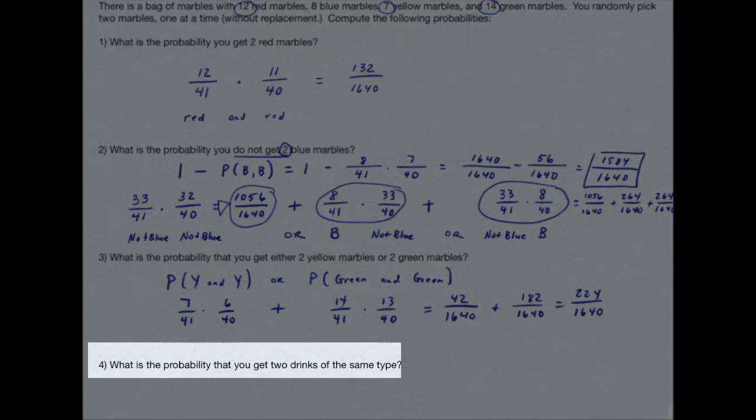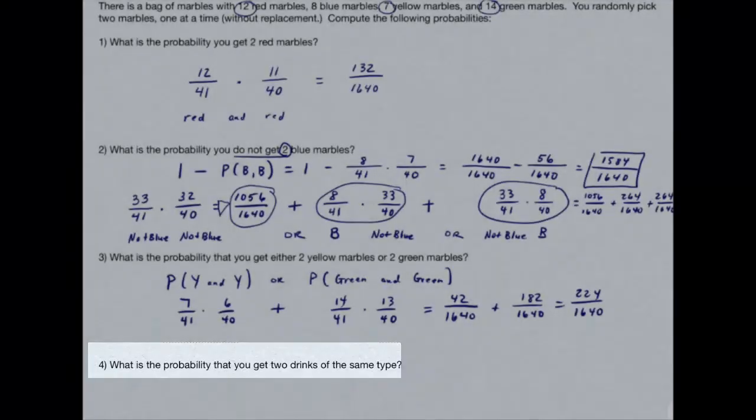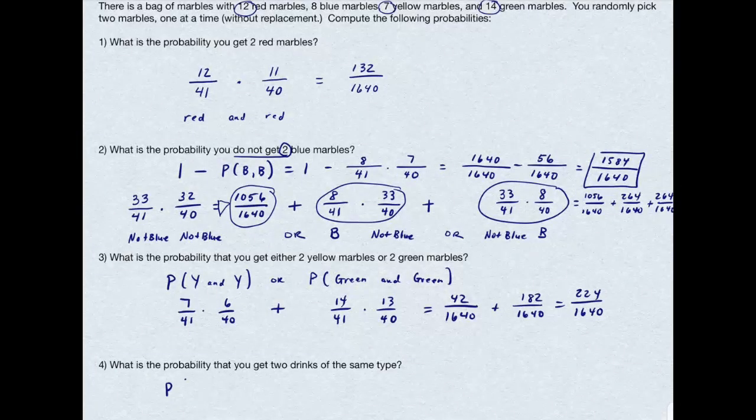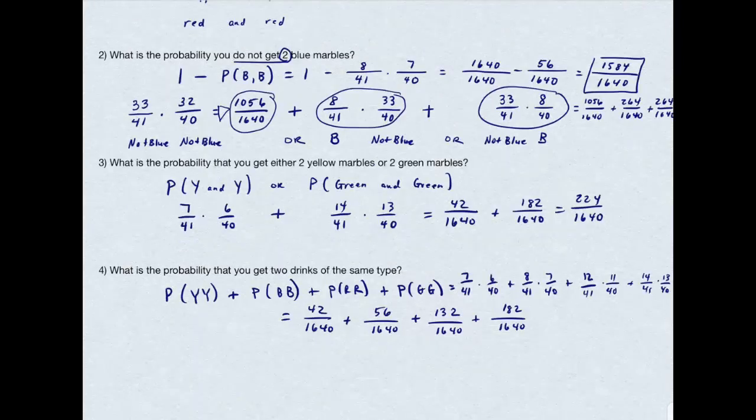The last one is the trickiest of these four. It asks for the probabilities that you get two drinks of the same type. That means the probability I get a yellow and a yellow, or the probability that I get a blue and a blue, or the probability I get a red and a red, or the probability I get a green and then a green. Again, the or translates to the addition, so I've gone ahead and done that. And these are as follows. And once I work up my multiplication, I'll get this. And then finally my answer is 412 divided by 1640.